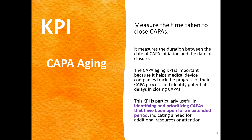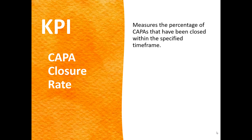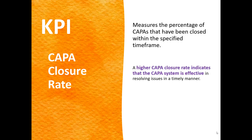CAPA closure rate is another important KPI. It measures the percentage of CAPAs that have been closed within the specified timeframe. A higher CAPA closure rate indicates that the CAPA system is effective. If you're closing out your CAPAs within the correct timeframe, that's a positive.